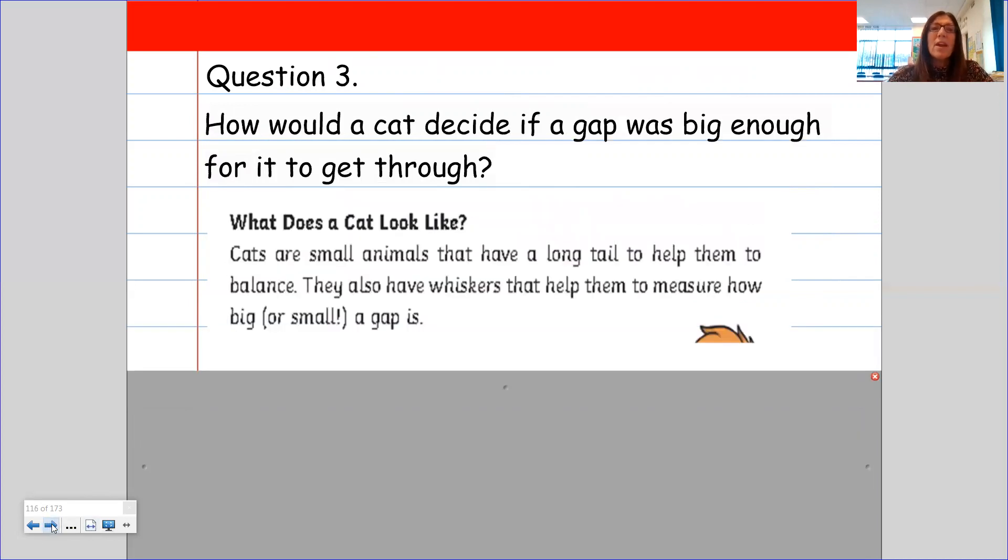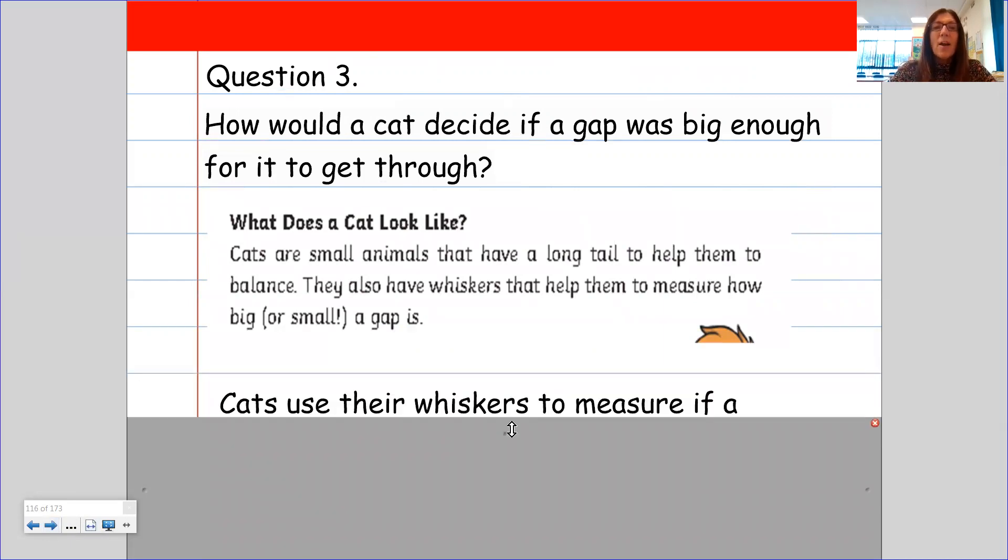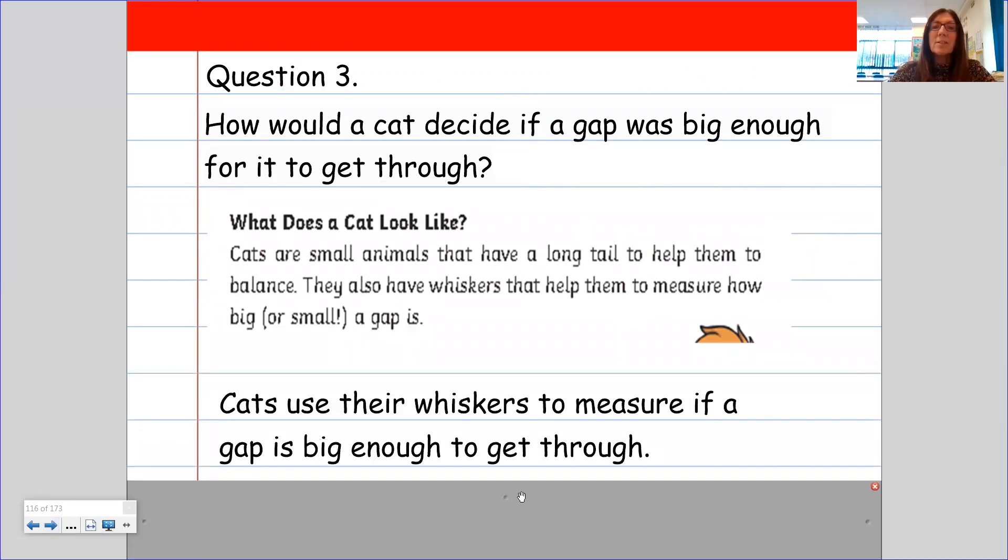So question three, how would a cat decide if a gap was big enough for it to get through? So it says on here that they also have whiskers that help them to measure how big or small a gap is. So how clever is that? So my answer would be cats use their whiskers to measure if a gap is big enough to get through.